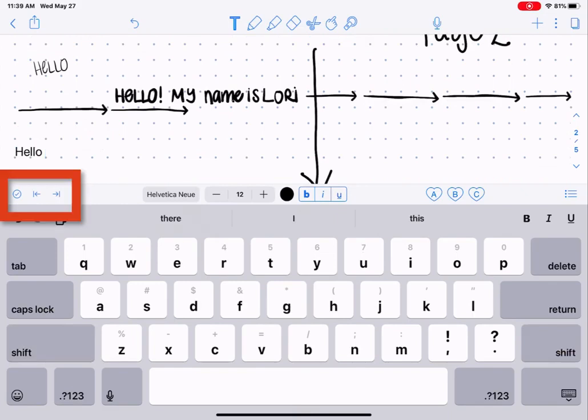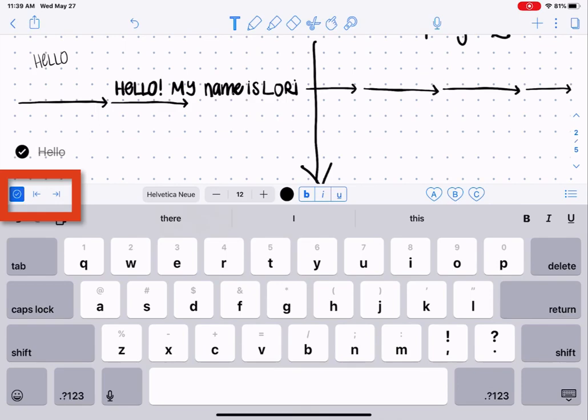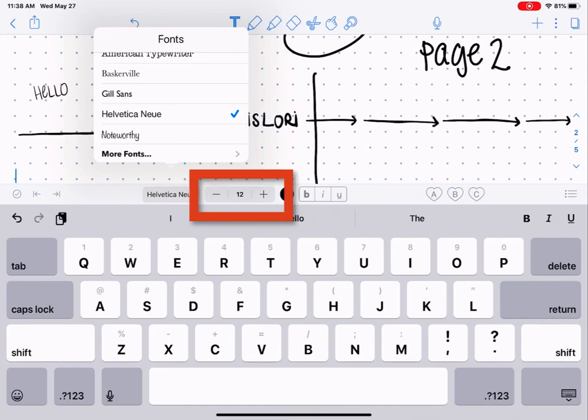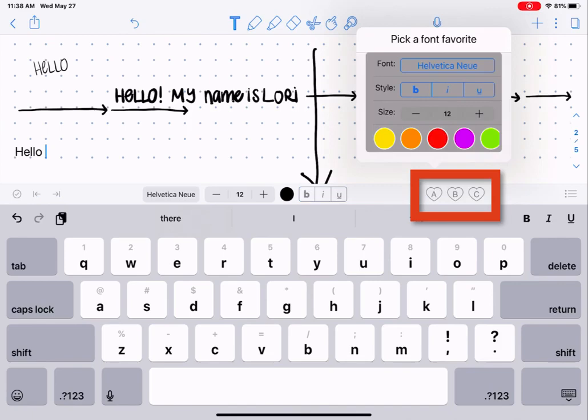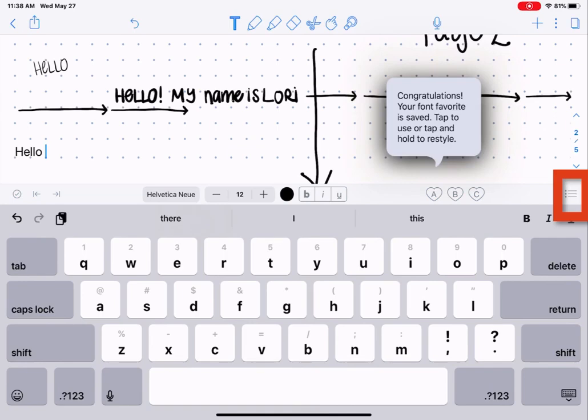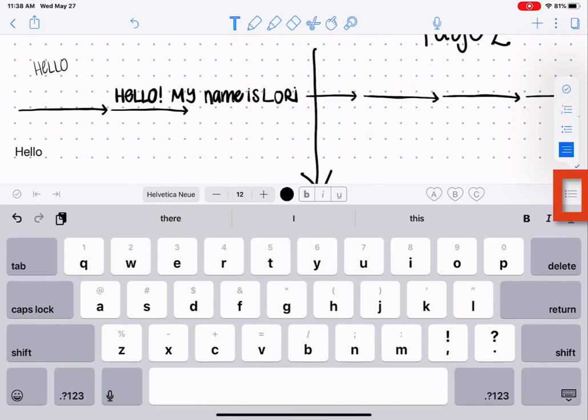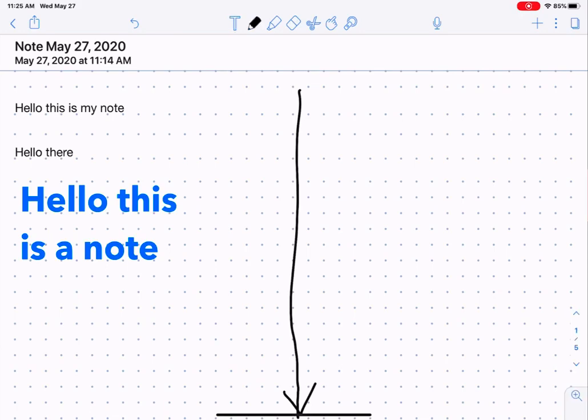When you're typing text, notice above your keyboard your first options on the left are indent options and you can turn something into a checkbox as well. You have your different options for changing your font type, your font size, your font color, bold italics or underlined, and then you can also set up with the ABC font favorites so that you don't have to come back and change these every single time. The last option is the bulleted list so you can create different types of lists or outlines as well.